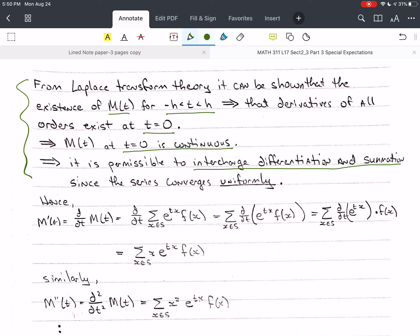Once you get to zero, you can still take the derivative, and it's zero. So, that's what it means by all orders. This implies that m of t at t equals zero is continuous. That means it is permissible to interchange differentiation and summation since the series converges uniformly. So, with this, we can do what we're going to do. Let's take the first derivative, m prime of t. Now, this is a function of t, and this is where students have trouble. We're going to take the derivative with respect to t,